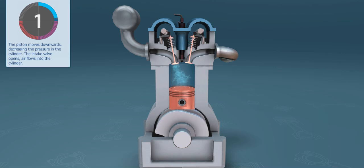The first stroke is the intake. The piston moves downwards, decreasing the pressure in the cylinder. The intake valve opens and air flows into the cylinder.